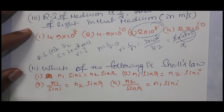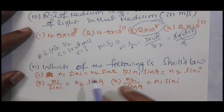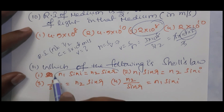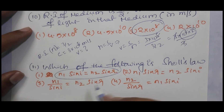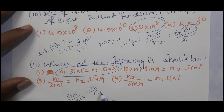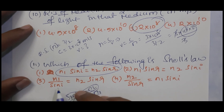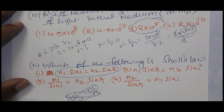Which of the following is Snell's law? The formula is sin i / sin r = n₂/n₁. By cross multiplication: n₁ sin i = n₂ sin r. So the answer is n₁ sin i = n₂ sin r. This is question number 11.